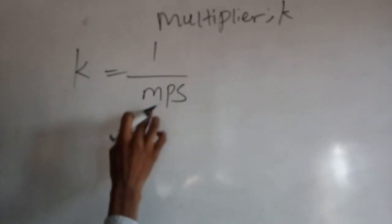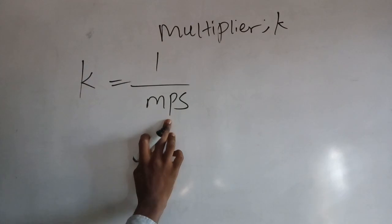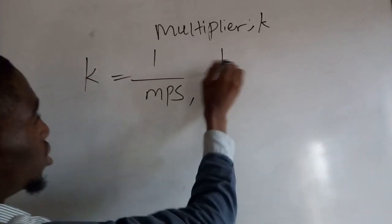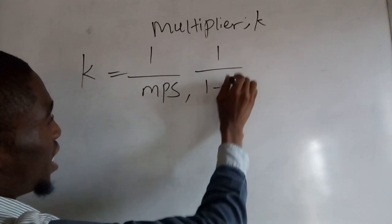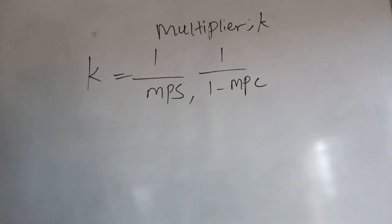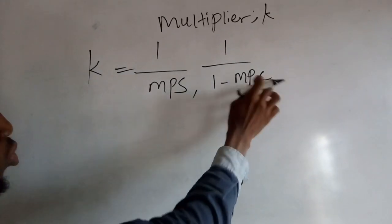The multiplier is equal to 1 over the MPS, which is marginal propensity to save, or 1 over 1 minus the MPC, which is the marginal propensity to consume.